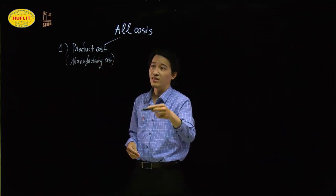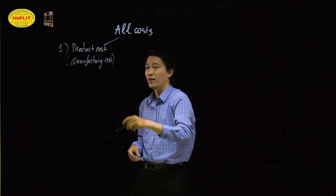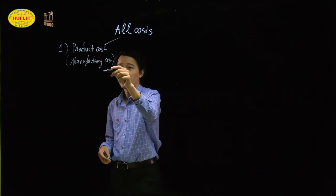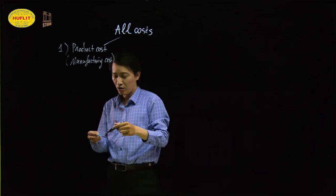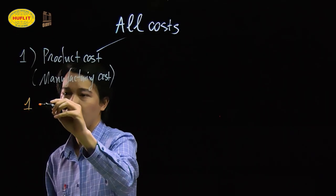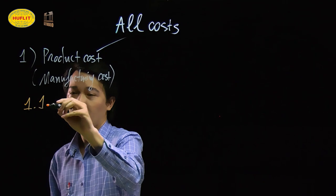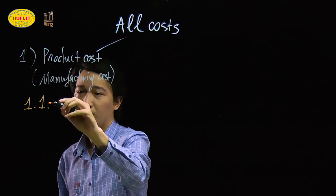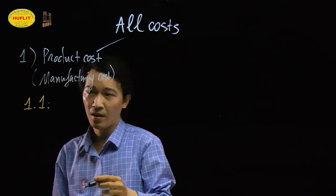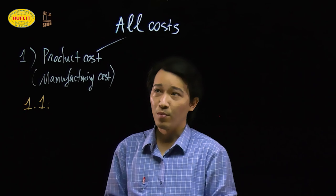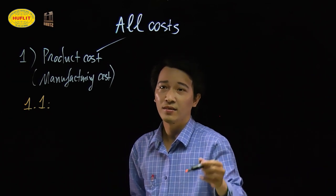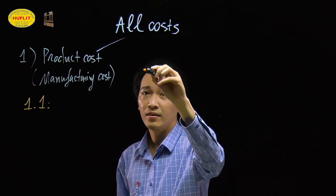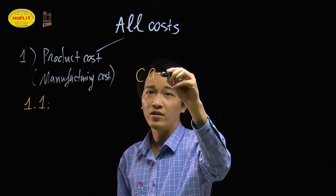On the left hand side, the first one is called product cost or manufacturing cost. Let's take a sample product — we'll use a car as an example.